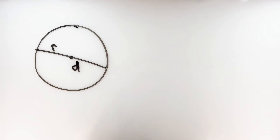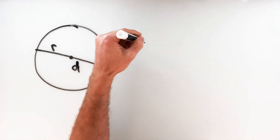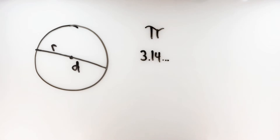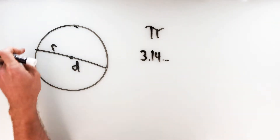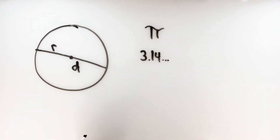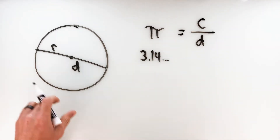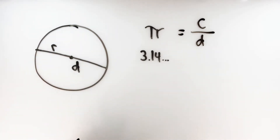The only other measurement you need is a value that, regardless of the size of the circle, is always constant — the value of pi, approximated as 3.14. That means it takes 3.14 diameters to wrap around the outside of the circle, because pi is really just a ratio: the ratio of the circumference of the circle to the diameter. Now, 3.14 is an approximation because pi is an irrational number — its decimal value does not terminate and does not repeat.